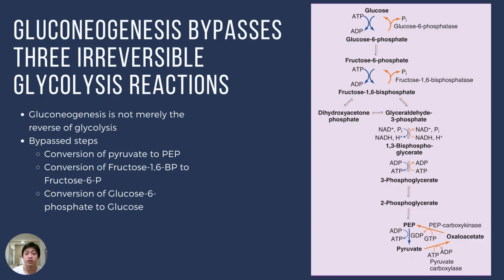Then glucose-6-phosphate is converted to glucose through the action of glucose-6-phosphatase, which is preferentially expressed in liver and kidney cells. In muscle cells, where there is a lot of glycogen stored, because muscle cells do not express glucose-6-phosphatase, they are not able to contribute to plasma glucose. The glucose remains inside the skeletal muscle cell as glucose-6-phosphate and has no way of being converted into free glucose.